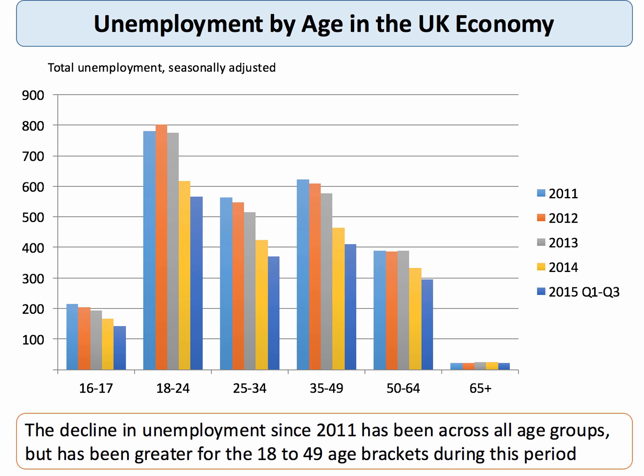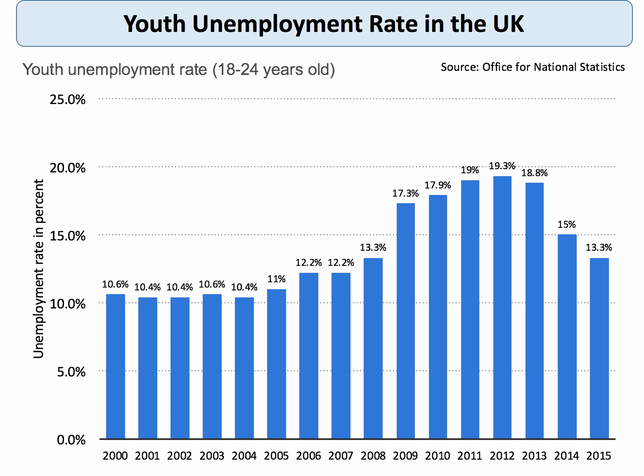We could also make a distinction about unemployment by age. The fall in unemployment in the last three or four years has actually been greatest for the 18 to 49 age brackets. A big policy issue when we disaggregate the UK unemployment data is youth unemployment. This chart shows the youth unemployment rate — people aged between 18 and 24 — which has been a major policy dilemma for successive governments, always above 10% and climbing to nearly 20% in 2012. Fortunately, the rate has fallen to 13% in 2015, but that's still two and a half times the national unemployment rate.